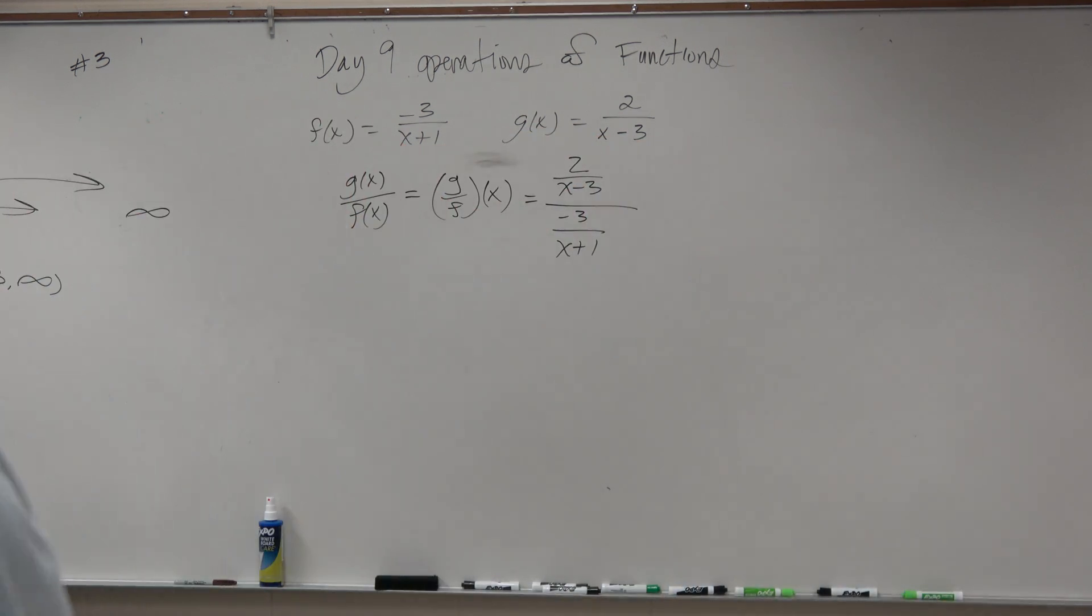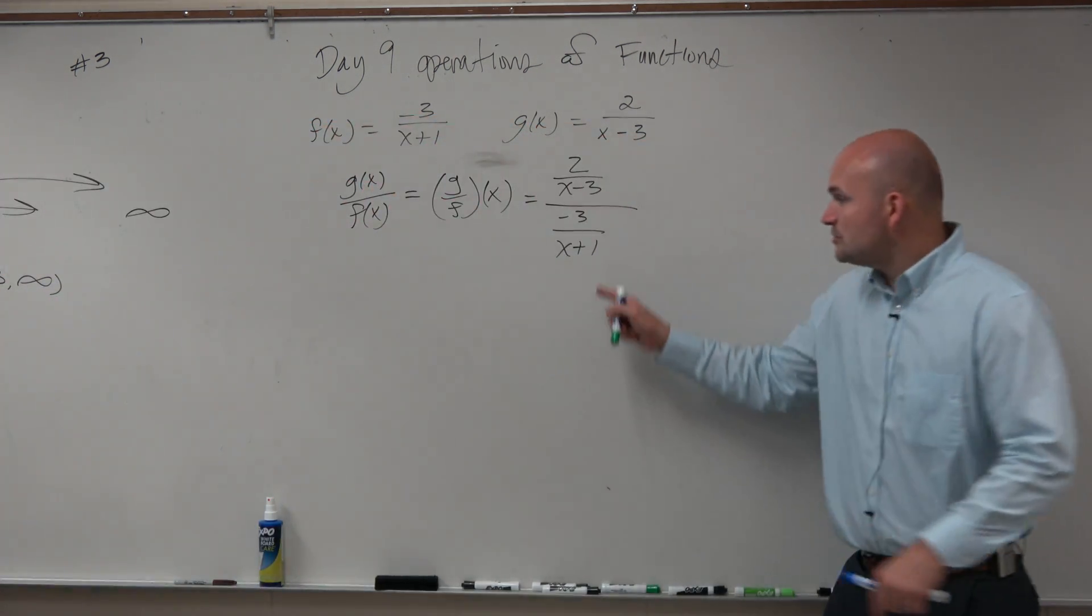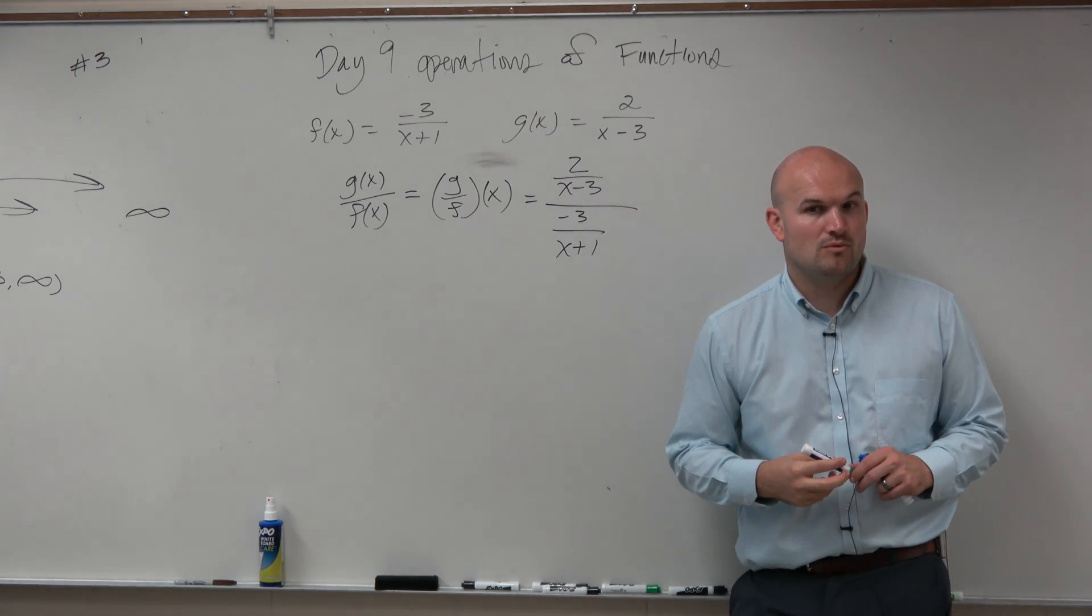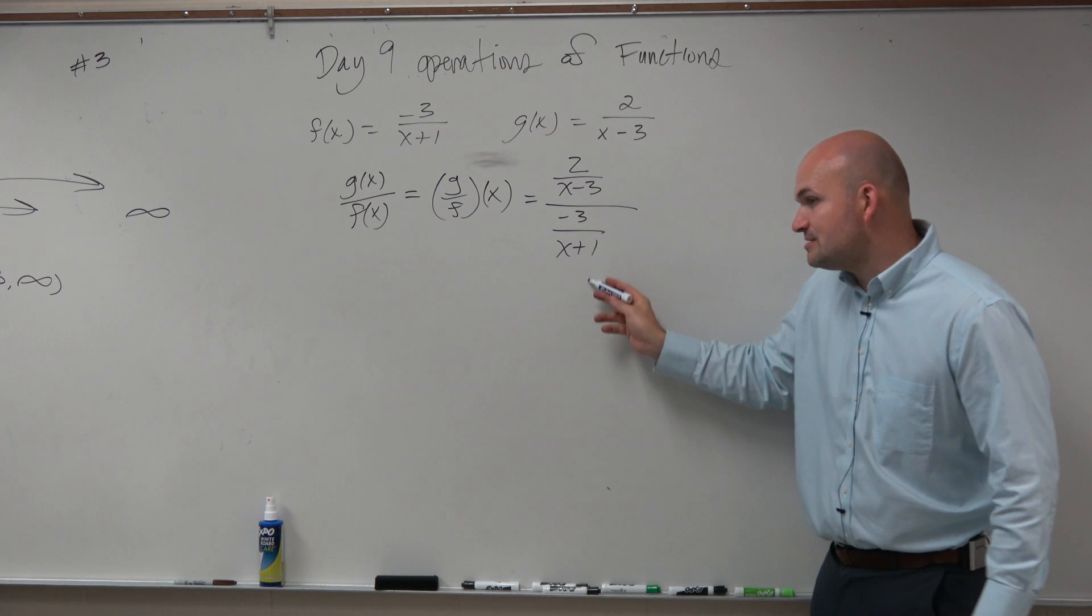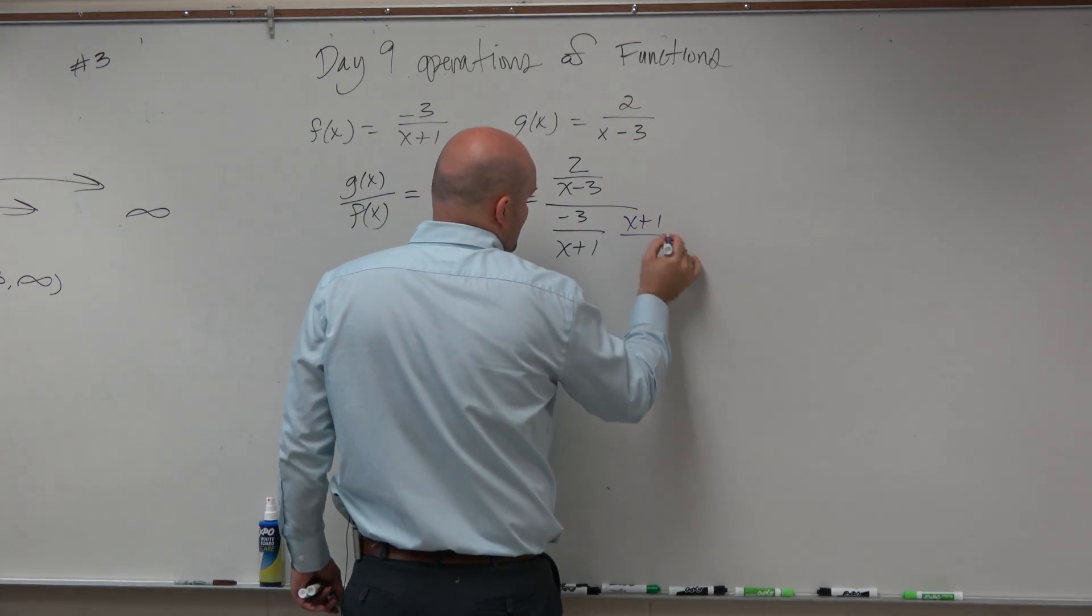So when we are dividing by a fraction, we don't want fractions in the denominator and the numerator. We only want one fraction. So we've got to get rid of this fraction. Now, any number multiplied by its reciprocal is always equal to 1. So why don't we just multiply this by its reciprocal? x plus 1 over negative 3.